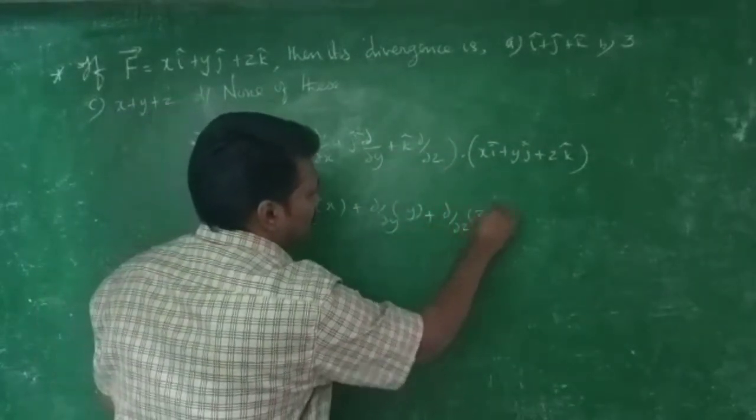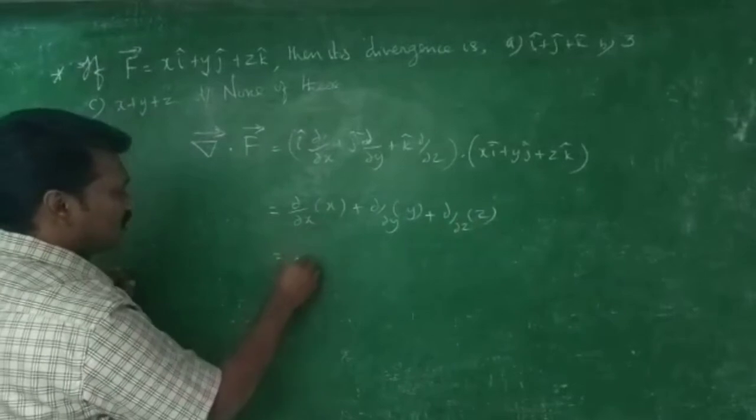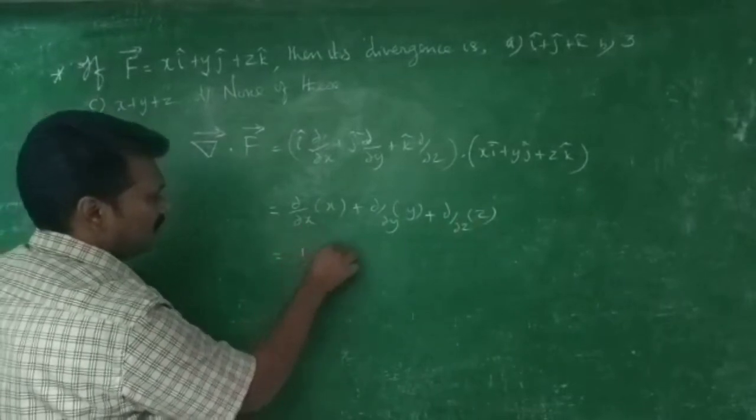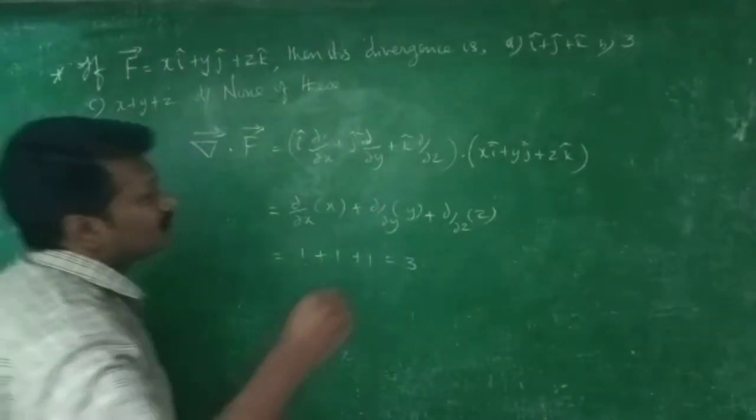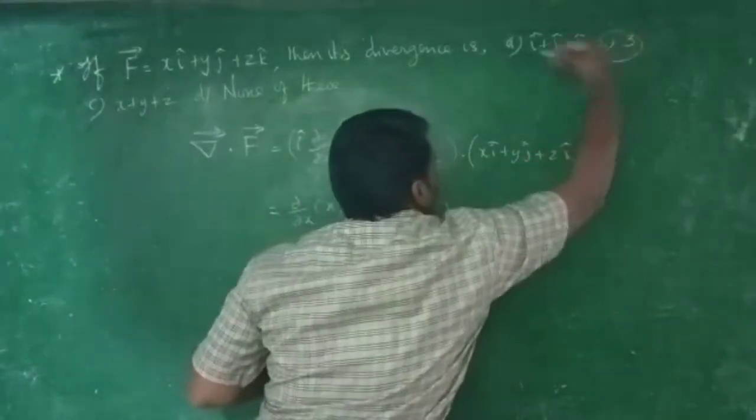So ∂/∂x of x is one, this is also one, this is also one, so three is the correct answer. Option B is the correct answer.